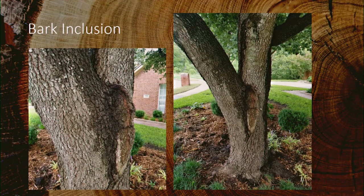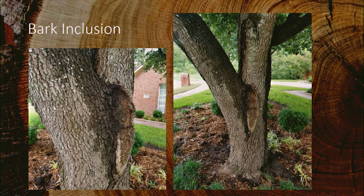Co-dominant stems develop bark inclusions, or what we call included bark. This is a live oak in Allen — live oaks handle bark inclusions fairly well, but in this case the tree developed a substantial bulge on the side where the bark is growing together with enormous force pushing it outward. Some trees don't do that — the bark growing toward each other kills that tissue and stops growing. In this case it's just pushing those cells out to the side.